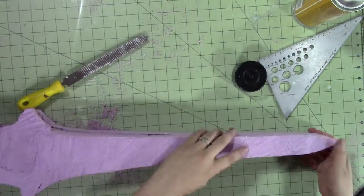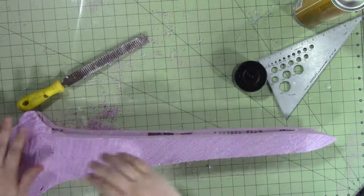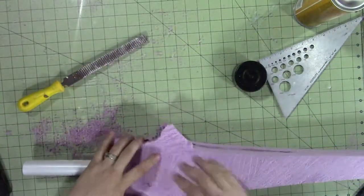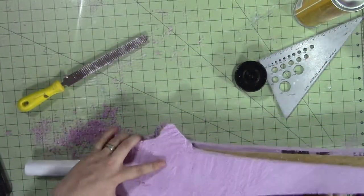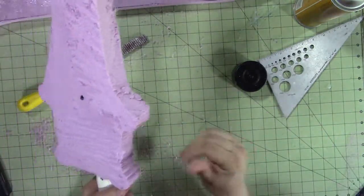And even when I'm working with these softer materials like this insulation foam, it is a good way of getting the job quickly done. The teeth pull a lot of material away very quickly. There you go. Bam.